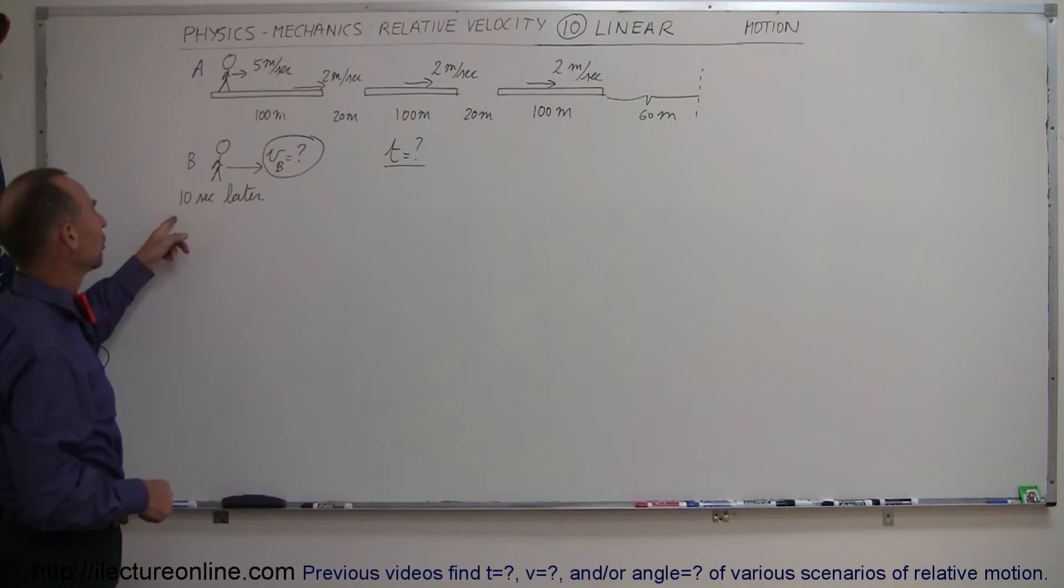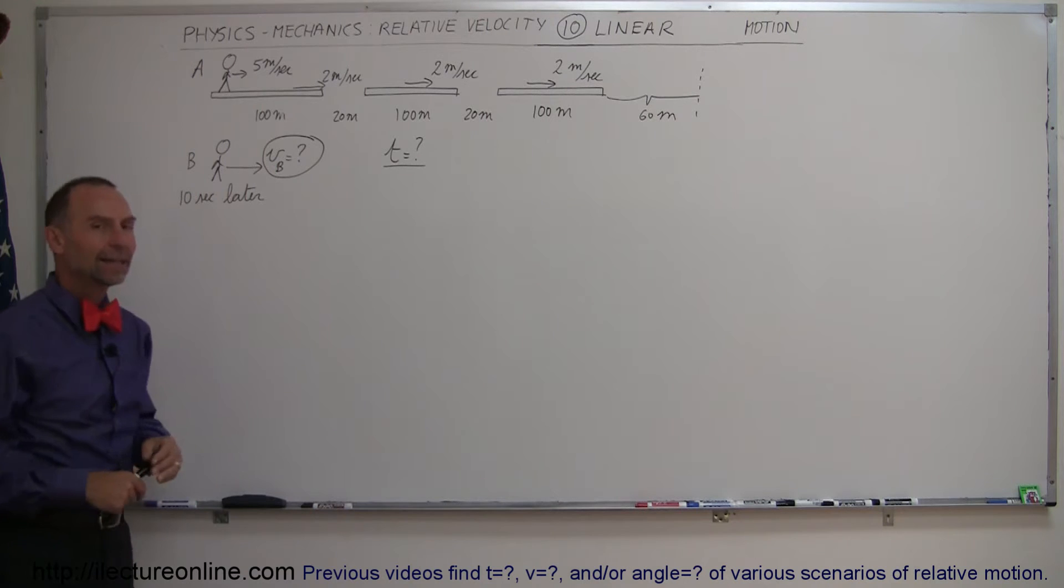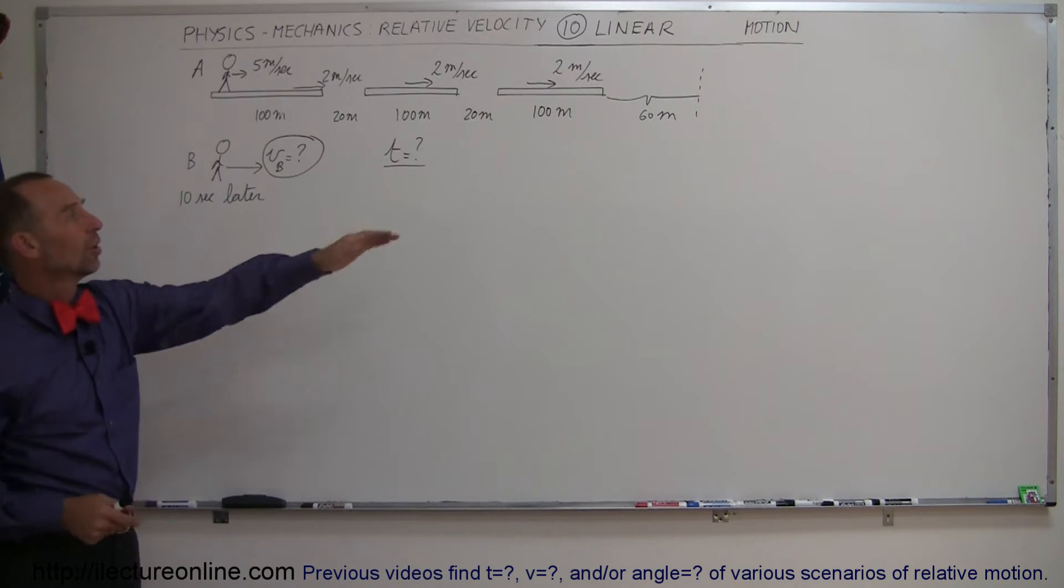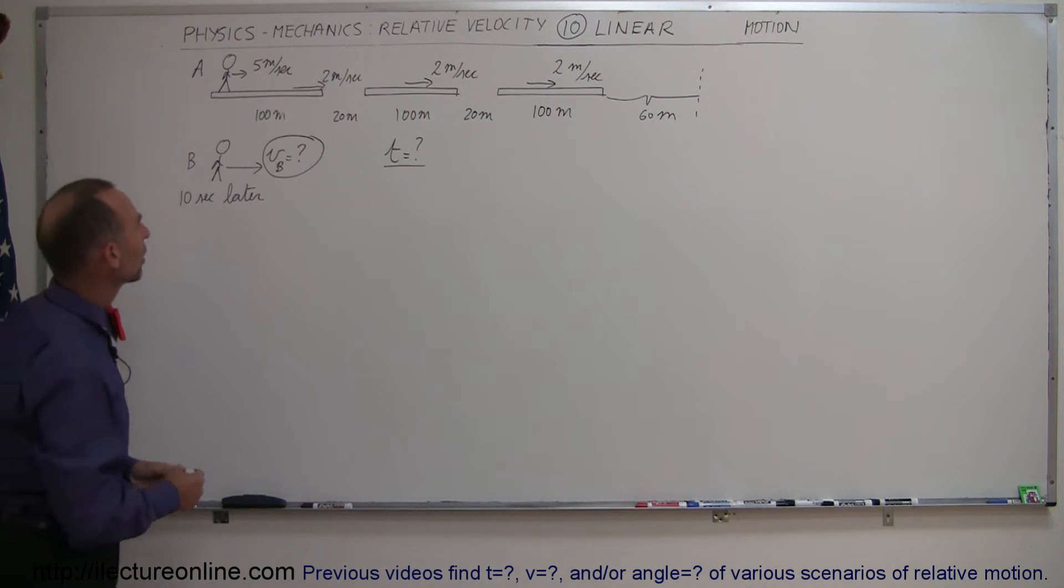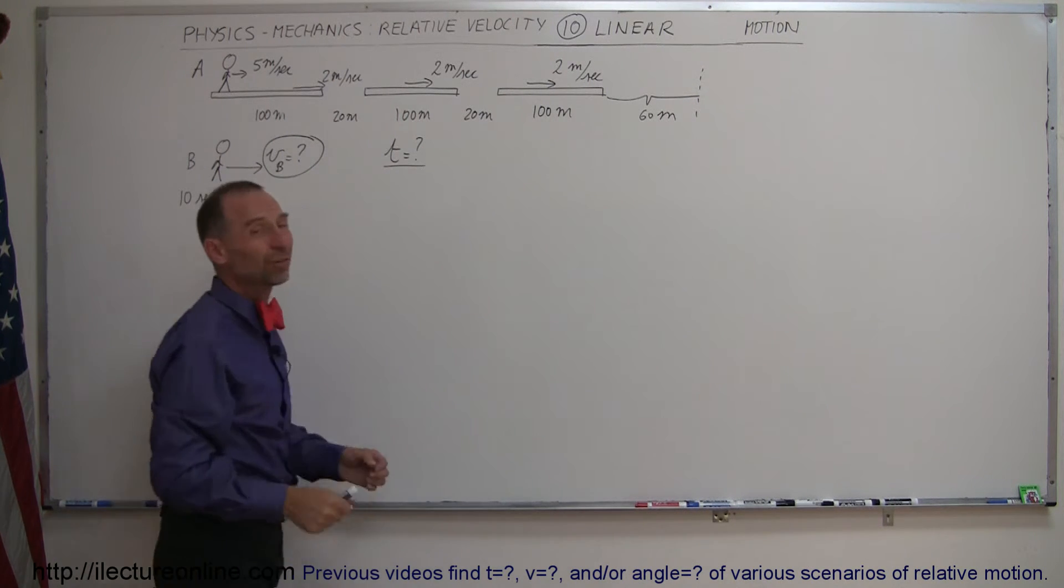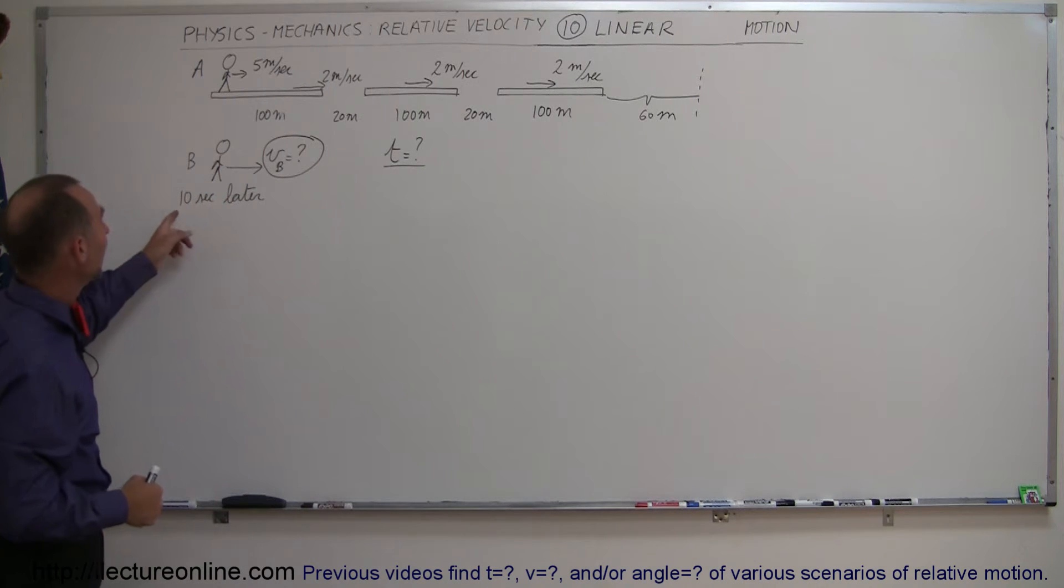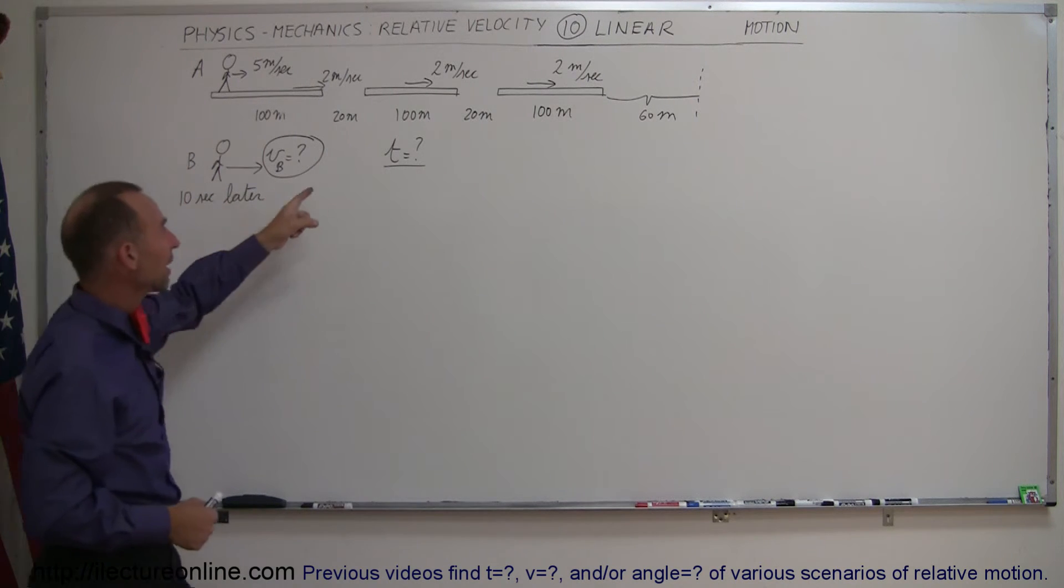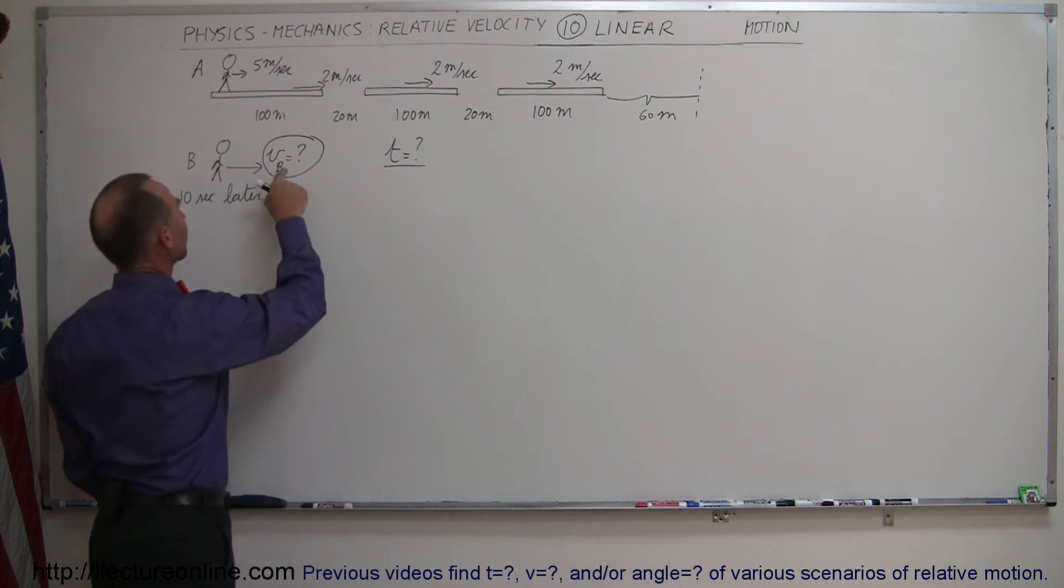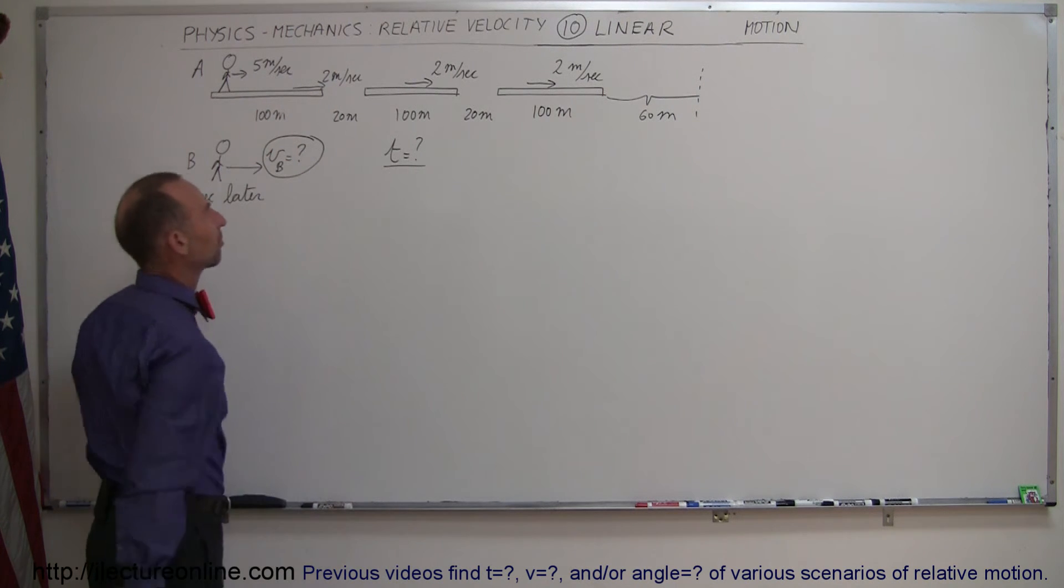There's a second passenger who's even later, 10 seconds later than passenger A, and that passenger says I'm not going to bother with the belt, I'm just going to run straight to the gate. Notice that if you add all these distances together that would add up to 400 meters, so he's got a 400 meter dash in front of him and he wants to catch passenger A by the time they both reach the boarding gate. How fast should passenger B run in order to catch up to passenger A?